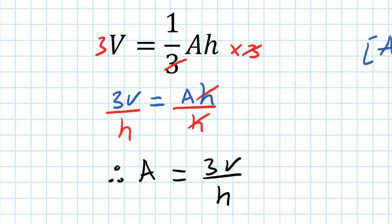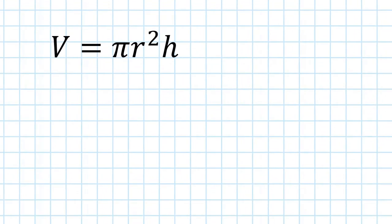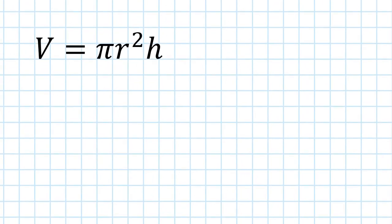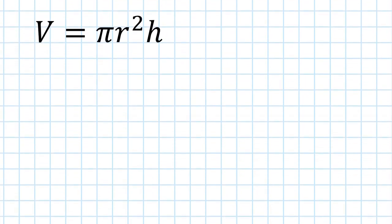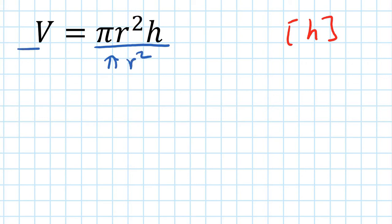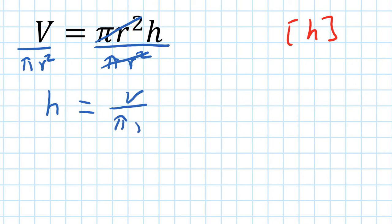Volume of a cylinder is V equals πr²h. Let's make h the subject — solve for h. I want to get rid of πr², so I divide by πr² on both sides. That cancels out, so h equals V over πr².